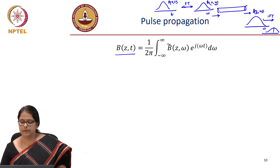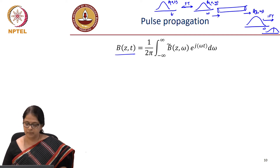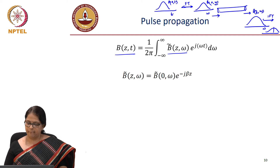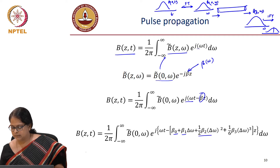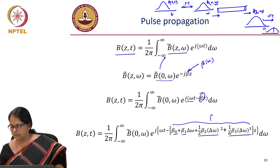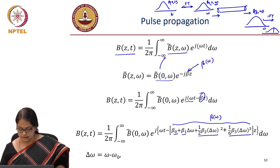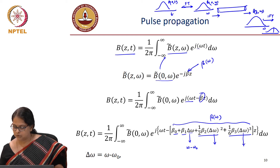This inverse Fourier transform is what we are representing here. b(z, t) is equal to — this is just an expansion — the inverse Fourier transform written properly: 1 over 2π, integrated from minus infinity to infinity, this is the frequency domain, times e^(jωt) dω. I will now substitute β, which is β₀ plus β₁ω plus β₂ω² plus (1/6)... this is just the Taylor expansion of β(ω). I substitute the Taylor expansion and do this integration to get back to my time domain. But δω is actually ω minus ω₀, so the variable here seems to be ω minus ω₀.